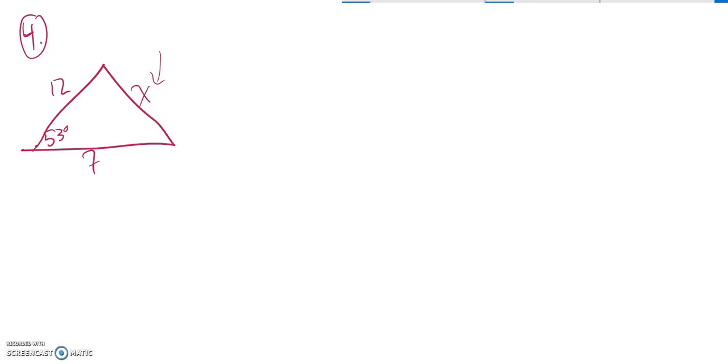So that just screams out for the law of cosines. I know that law of cosines is the side I'm looking for squared equals the other two sides squared added together, just like Pythagorean theorem.